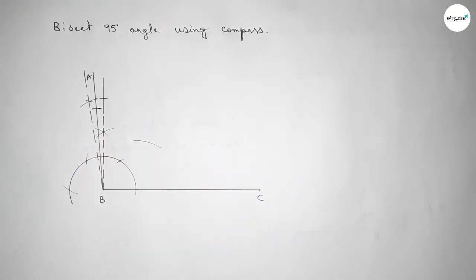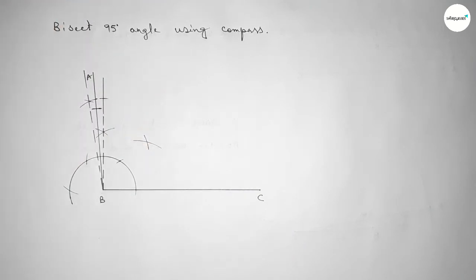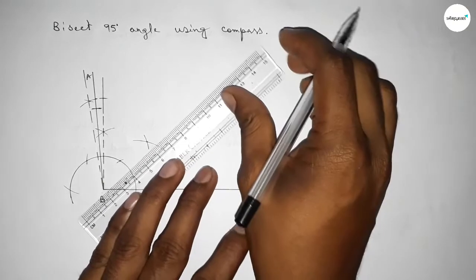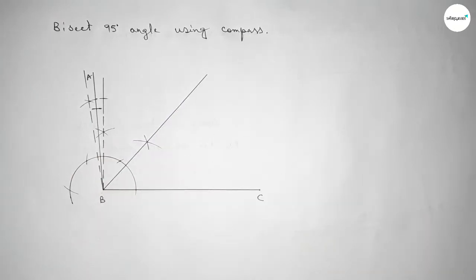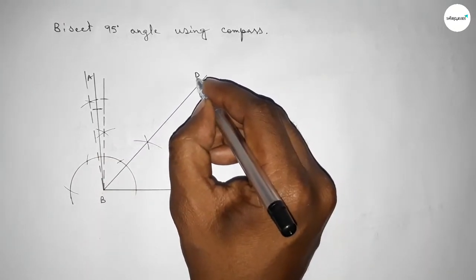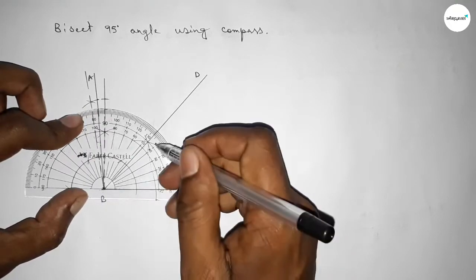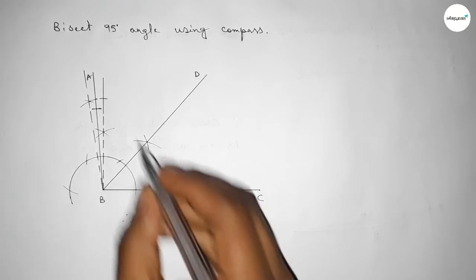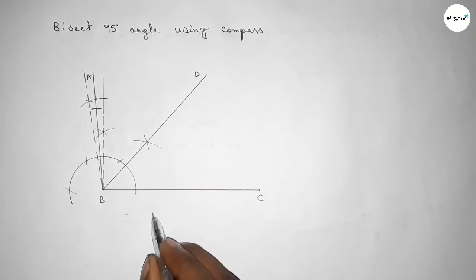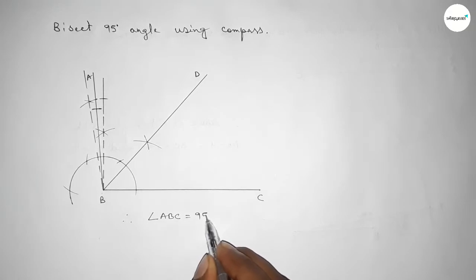Checking the angle — this is perfectly a 95-degree angle. Now we have to bisect this angle. Putting the compass here and taking this length, drawing an arc here, then with the same length putting the compass here and cutting here. Both curves intersect at a point. Now joining this line and taking here point D.